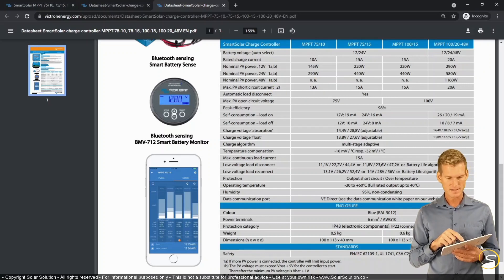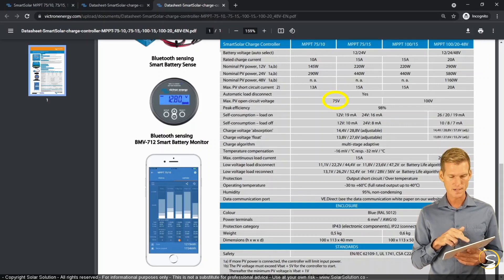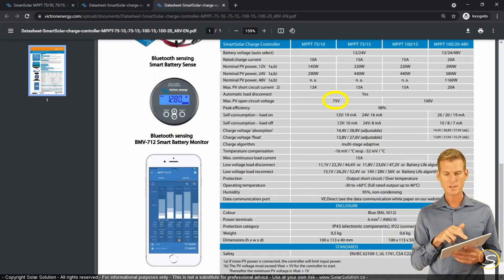And this is actually also applicable, in my opinion, this is also applicable to the maximum photovoltaic open circuit voltage, which is 75 volts for this controller.